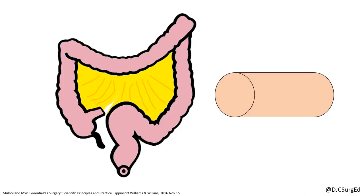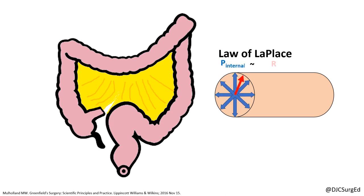According to the law of Laplace, for a given internal pressure, the larger the radius, the greater the wall tension. As a result, in a large bowel obstruction, the cecum, which has the greatest diameter, is the easiest to perforate.